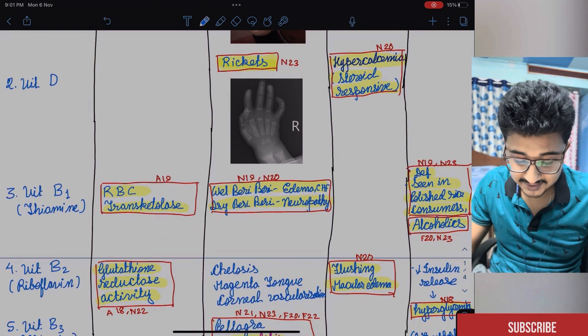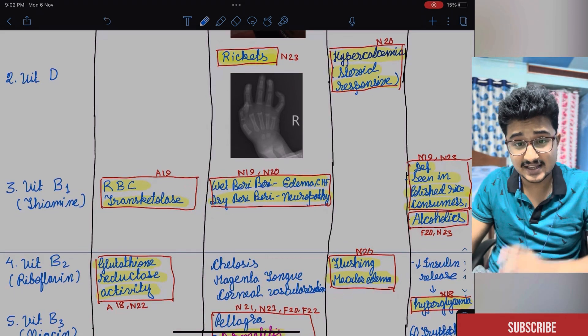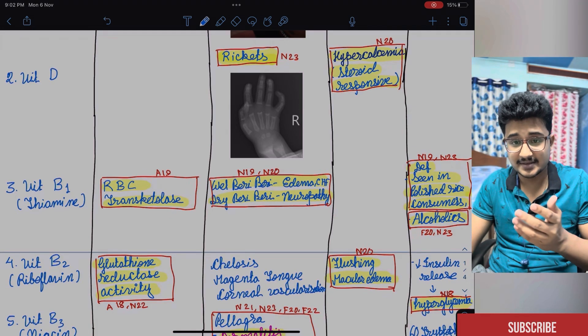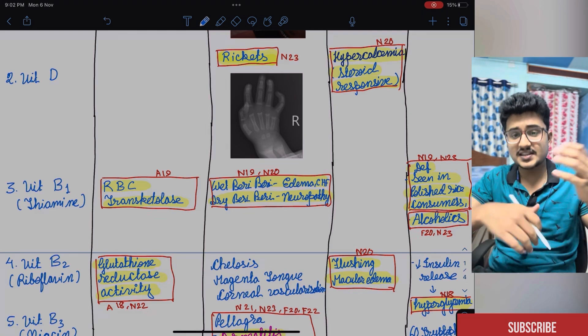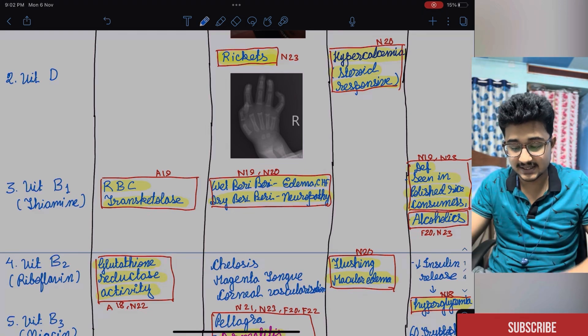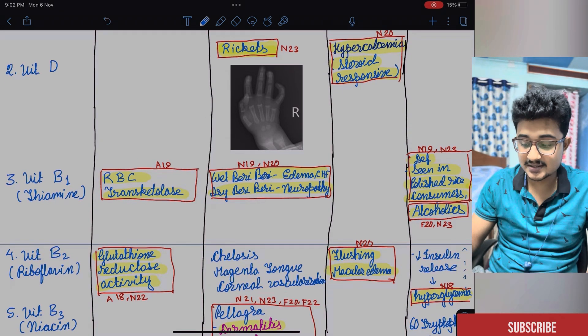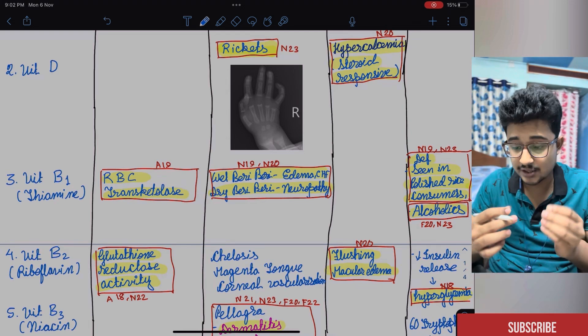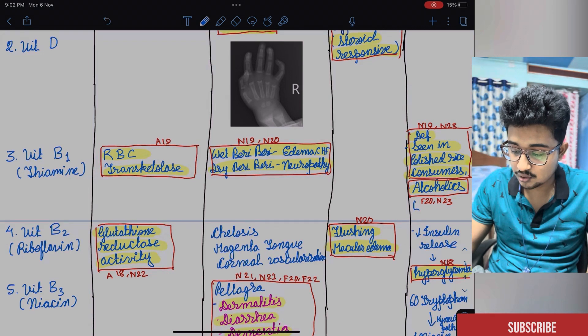After that is vitamin B1, B complex thiamine. RBC transketolase enzyme is used for assaying. And wet beriberi. See beriberi is very much important. In wet beriberi there would be edema, there would be heart failure means high output cardiac failure would be there. And in dry beriberi it is neuropathy. And the deficiency is seen in polished rice because the aleurone layer is rich in thiamine.